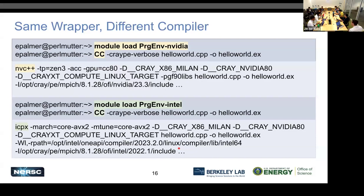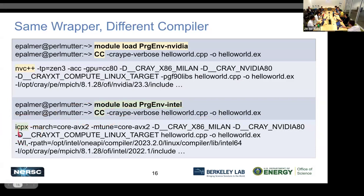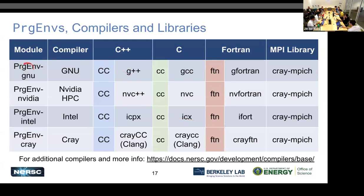Another feature is that the wrapper works in conjunction with the programming environment. If I load 'PrgEnv-nvidia', when I type 'cc', I get the NVC++ compiler. If I do 'PrgEnv-intel', that same 'cc' line now uses an Intel compiler. The flags automatically included also change to adjust for each compiler. So you run the same compile line, load different programming environments, and try each one to see which works best. This table shows: depending on which programming environment you load, this is what compiler you get.